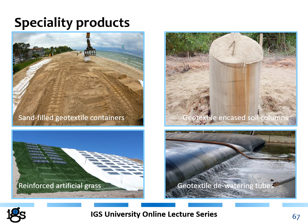Specialty products incorporating geosynthetics — which may not be traditional geocomposites — further demonstrate the near-limitless uses of geosynthetics in geotechnical applications. Examples include sand-filled geotextile containers for coastal protection and erosion control on riverbanks, geotextile-encased soil columns, reinforced artificial grasses with solar panels attached, and geotextile dewatering tubes.